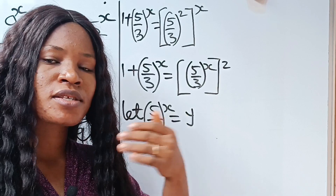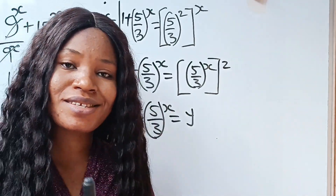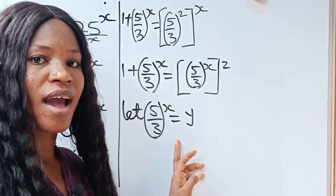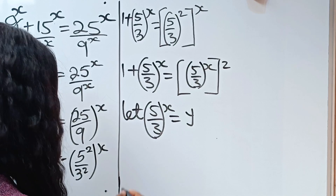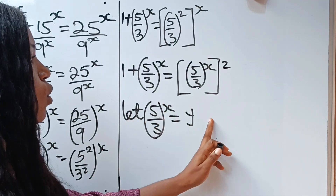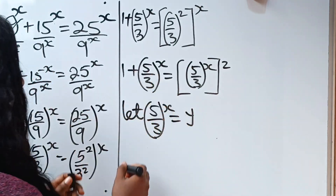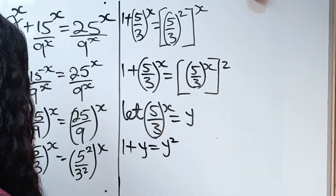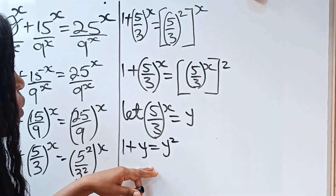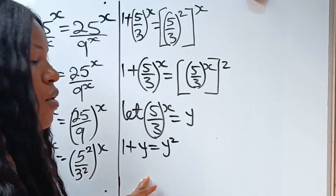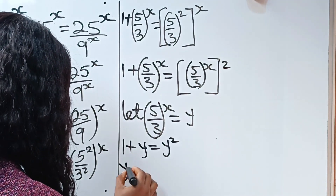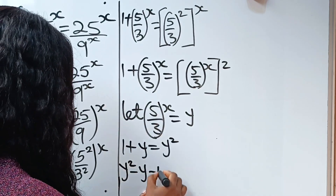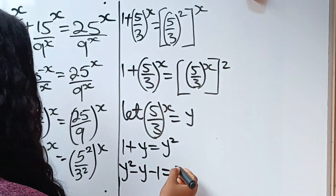Trust me, after solving the quadratic equation, the most interesting aspect of this particular video is where we have to bring this in to find the value of x. Now, since we let this be equal to y, let's substitute. So we are going to have 1 plus y is equal to y squared. Now let's arrange it properly — y squared comes first, so this will transfer to become minus y, minus 1 is equal to 0.